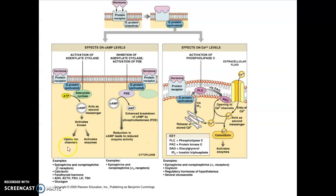Notice in this picture — if we look at an example of epinephrine and norepinephrine — we know those can also be neurotransmitters. They would be hormones if released into the bloodstream, but they can also be neurotransmitters if released at a synapse. In this case, however, we're talking about them from the perspective of being hormones.